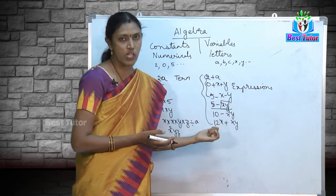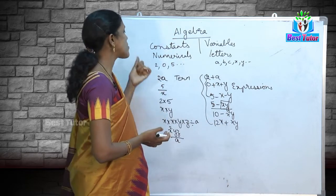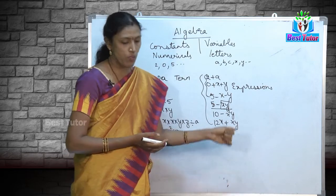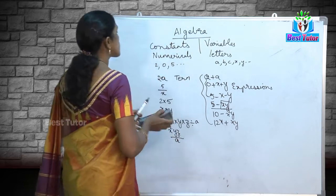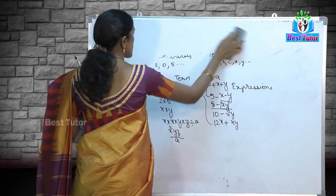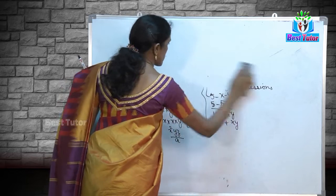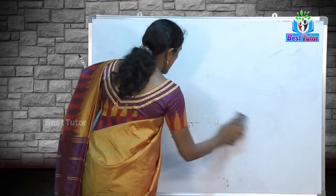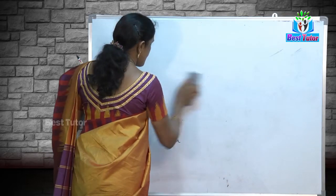So these are all expressions. We have learnt four things: constants, variables, terms, and expressions. Let us move on.